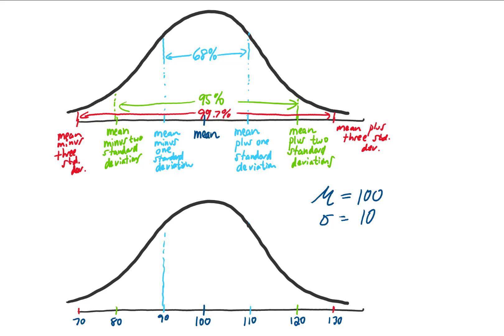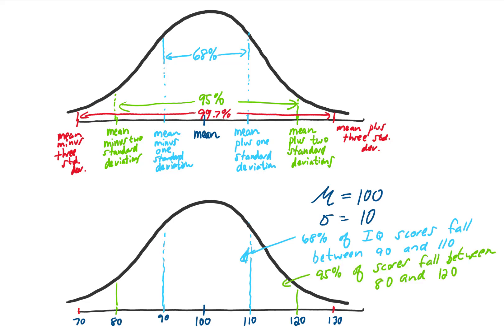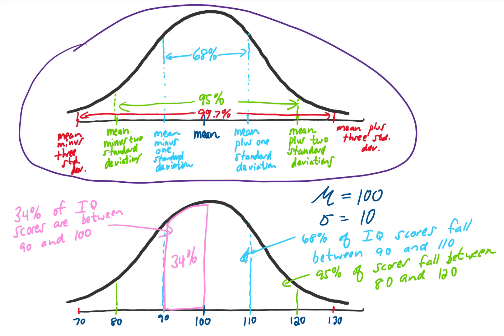Based on what we know about normal distributions, we can say that 68% of our IQ scores are going to fall between 90 and 110. We can also say that 95% of our IQ scores fall between 80 and 120. We can go further: knowing that the entire region between the blue lines is 68% of the data, then this region on one side must represent 34% — that's half of 68. So 34% of our IQ scores fall between 90 and 100. All these rules combined we call the empirical rule for normal distributions.